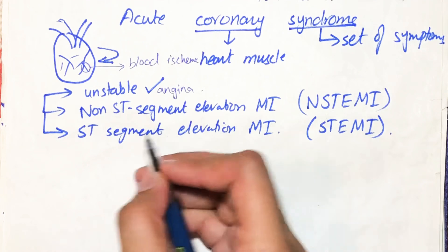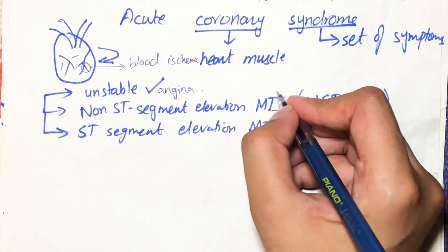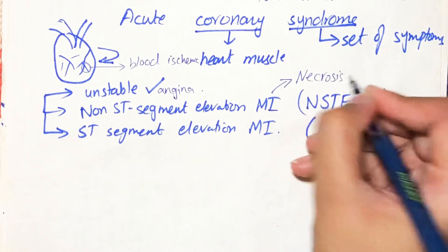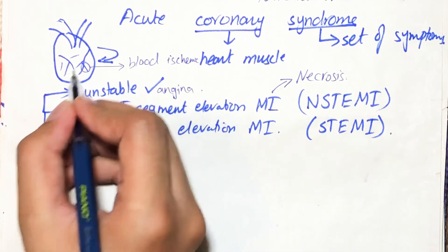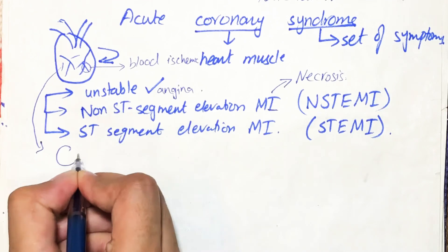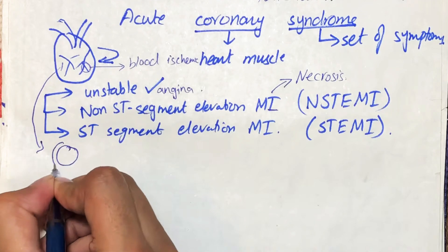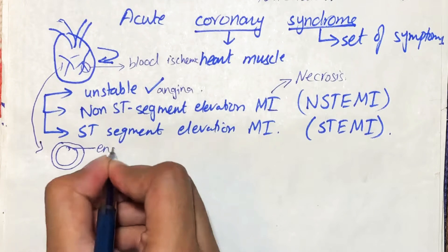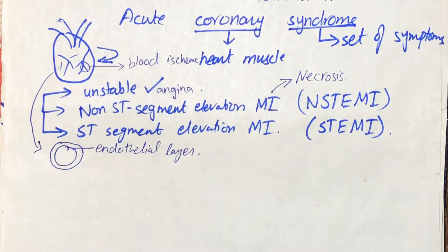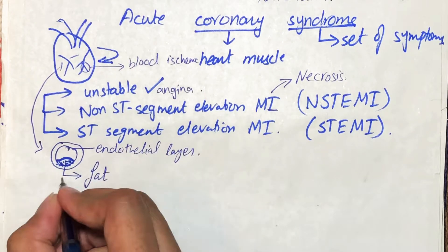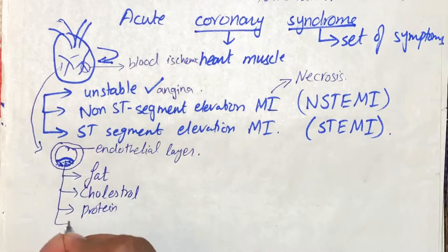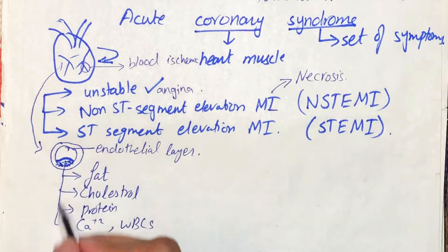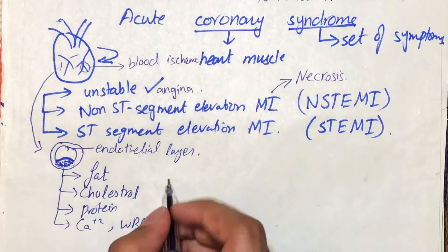But if thrombosis or embolism causes complete blockage of the artery, there will be infarction. Infarction is very serious — it means there is necrosis occurring in the heart muscles. In acute coronary syndrome there is formation of atherosclerosis in the coronary artery. If we look at a cross-section of this artery, the inner endothelial layer will show deposition of fat, cholesterol, proteins, calcium, and white blood cells. All of this deposited material is called the soft interior of the block.